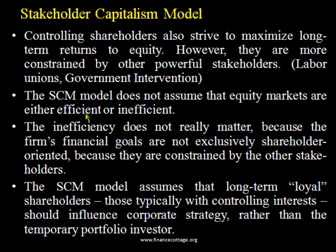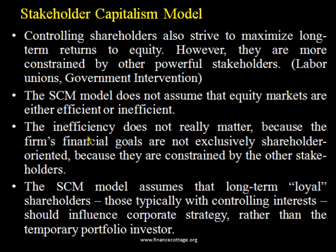But if the market is not efficient, or you cannot determine anything about its efficiency, there is another model known as the stakeholders capitalism model. This model says that there are other stakeholders more powerful than the controlling shareholders — such as labor unions and government intervention. If labor unions are strong, they can influence management policy. If there is government intervention, the government can also control the performance of a corporation. The stakeholders capitalism model does not assume markets to be either efficient or inefficient, because the firm's financial goals are not exclusively shareholder-oriented but constrained by other stakeholders.